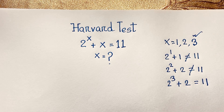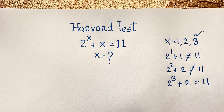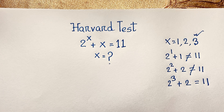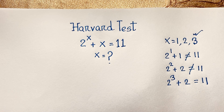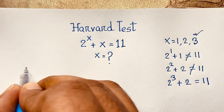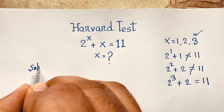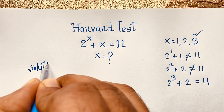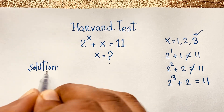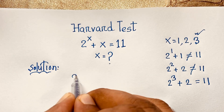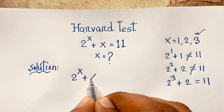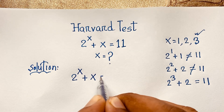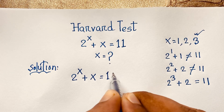But how do we solve this interesting math problem formally? I will solve this question using an easy method. Our question is 2 to the power of x plus x is equal to 11.